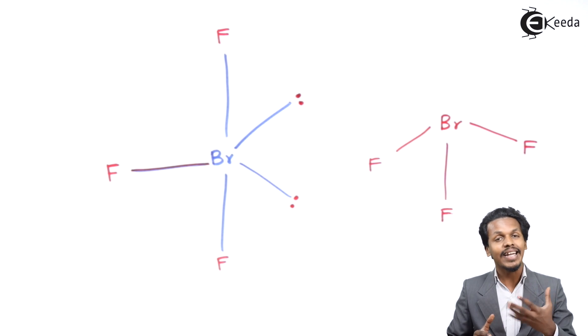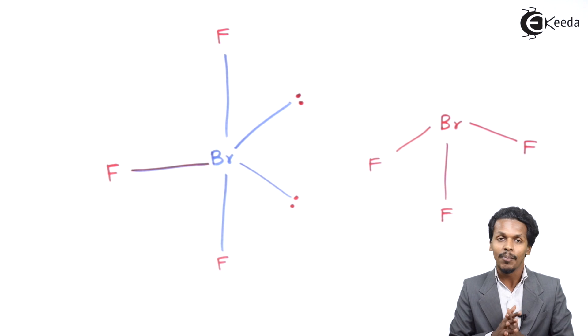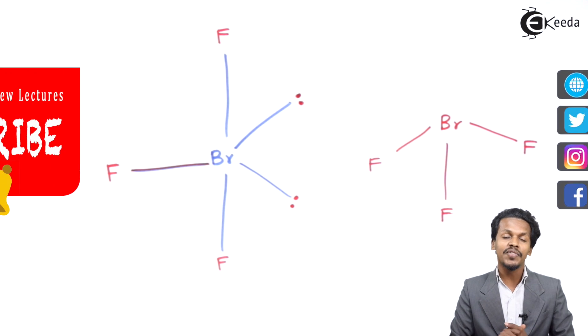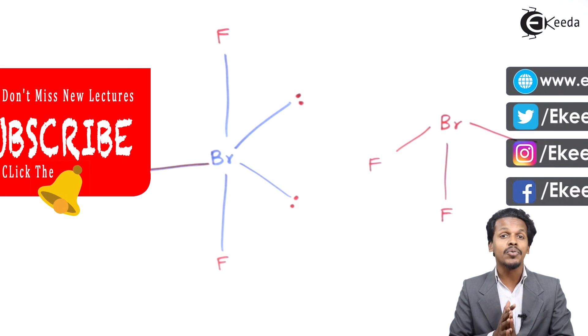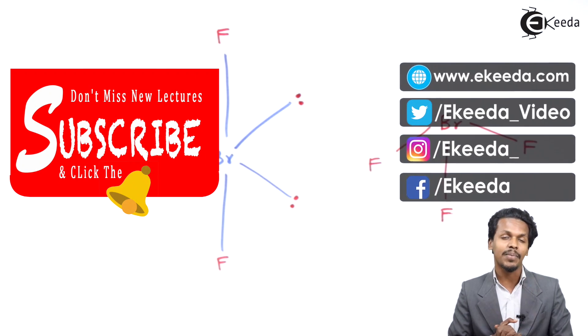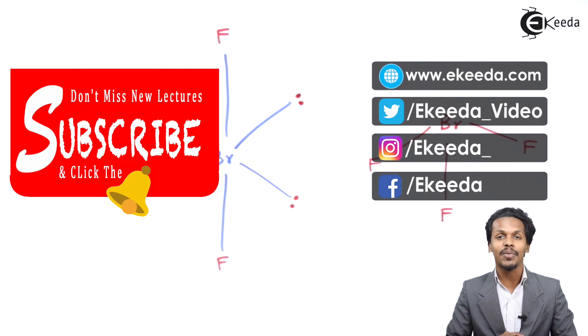So BRF3 is in fact a bent T-shaped molecule. Thank you friends for watching this video. I hope you have understood this clearly, and I hope to see you next time. Till then, don't forget to subscribe to the channel. Thank you so much.